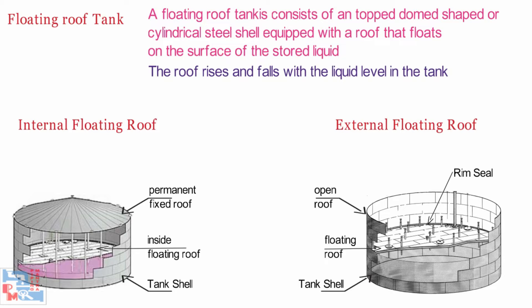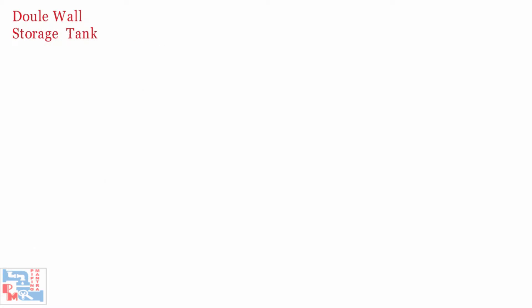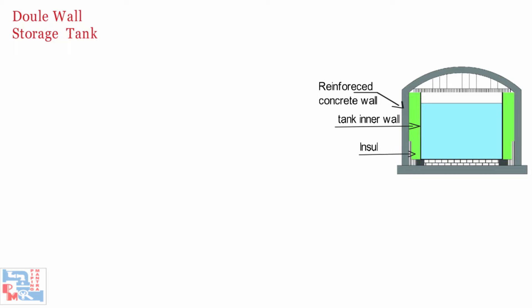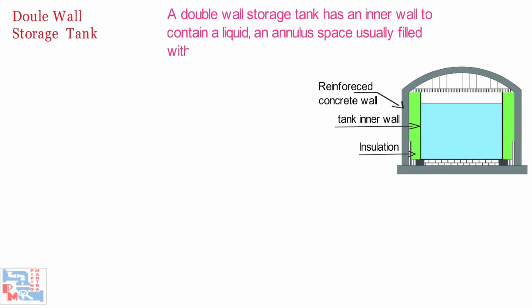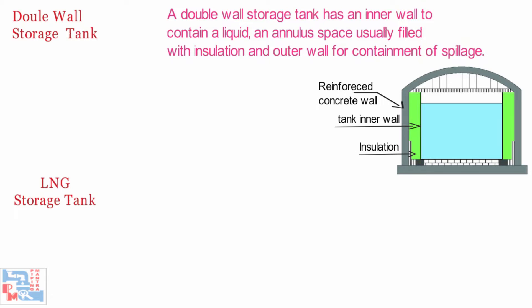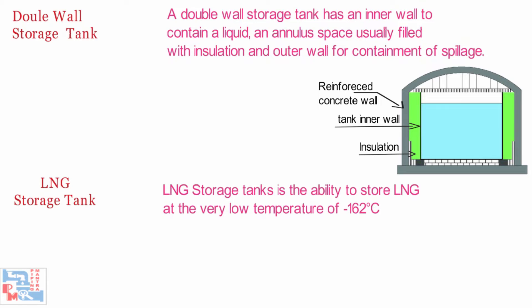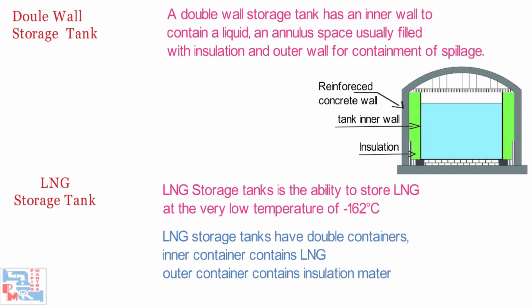The floating deck is also equipped with fittings that penetrate the deck and serve operational functions. Next is the Double Wall Storage Tank — it has an inner wall to contain a liquid, an annular space usually filled with insulation, and an outer wall for containment of spillage. The last one is the LNG Storage Tank — a specialized type used for the storage of liquefied natural gas. LNG storage tanks can be found in-ground, above ground, or in LNG carriers. They store LNG at the very low temperature of minus 162 degrees Celsius and have double containers, where the inner container holds LNG and the outer container contains insulation material.